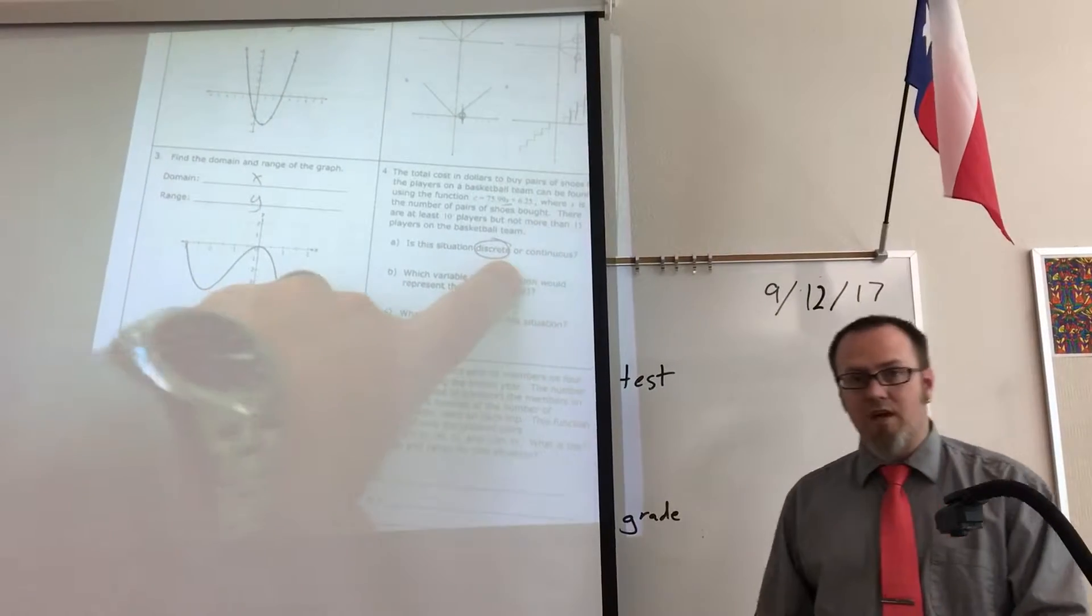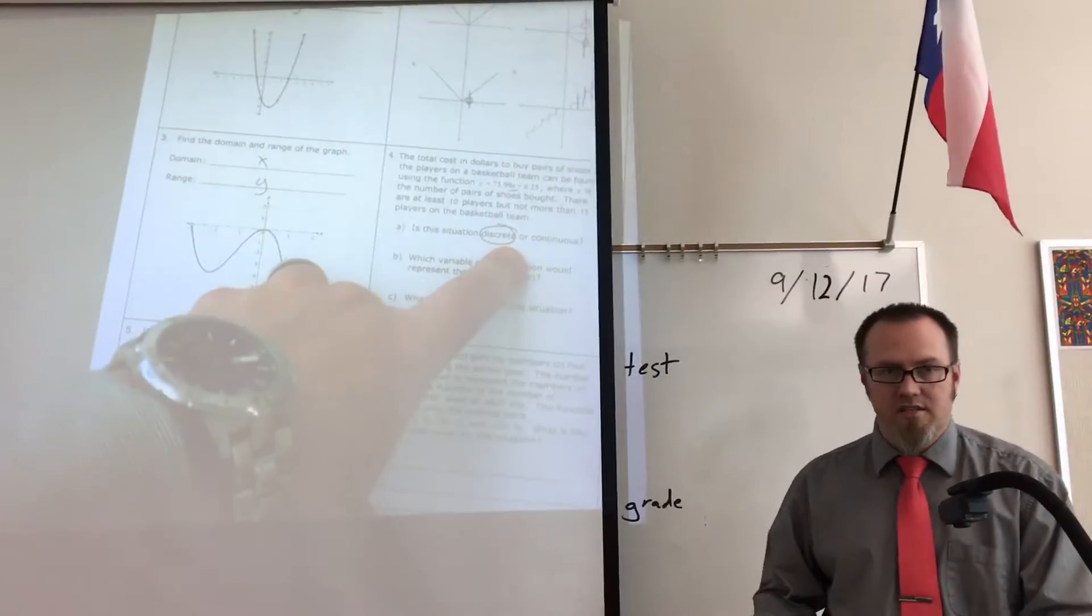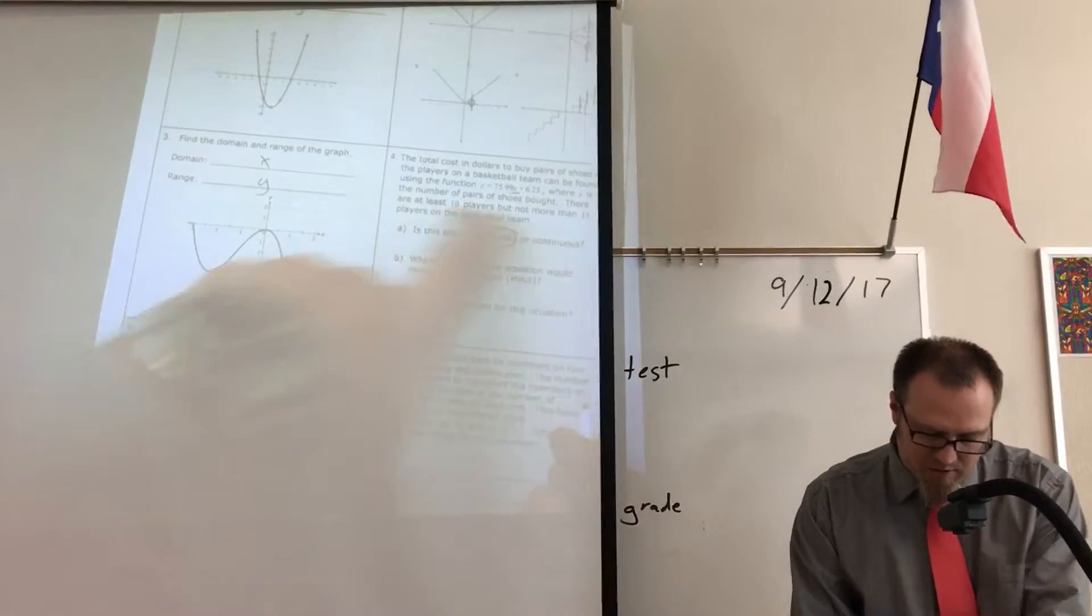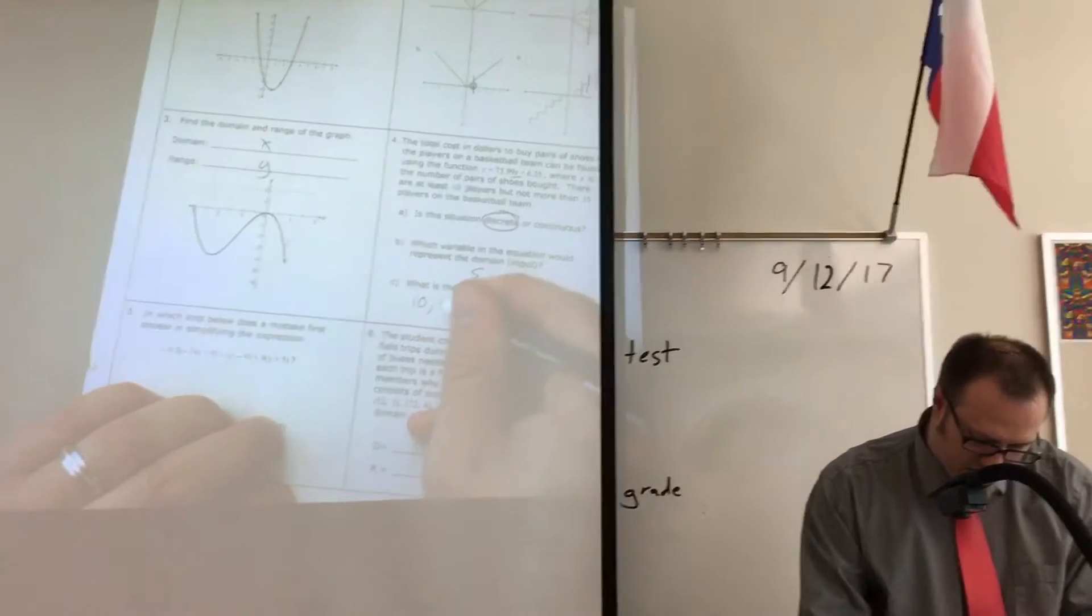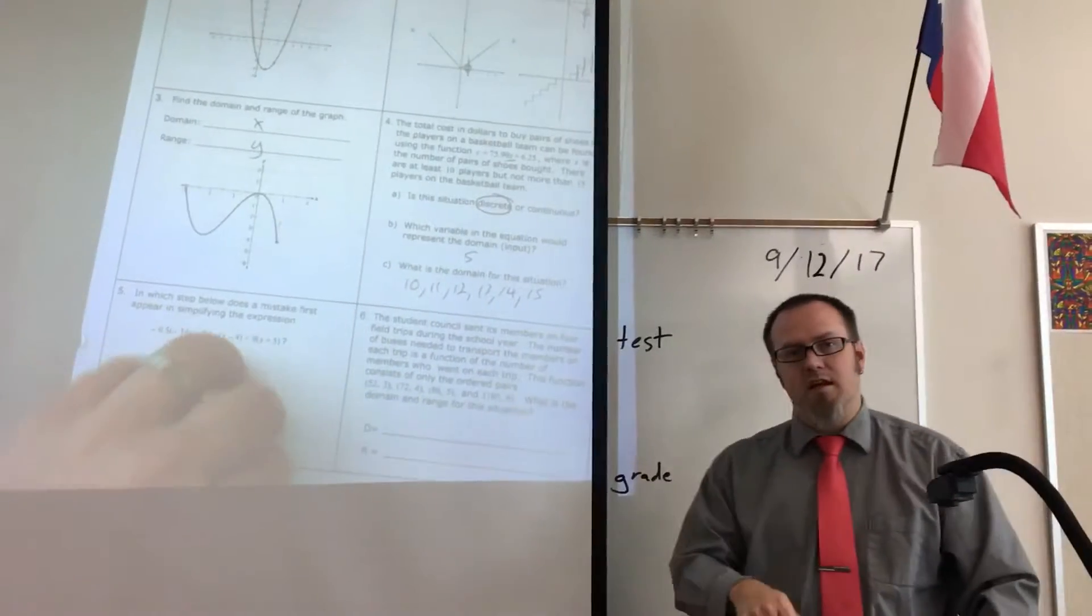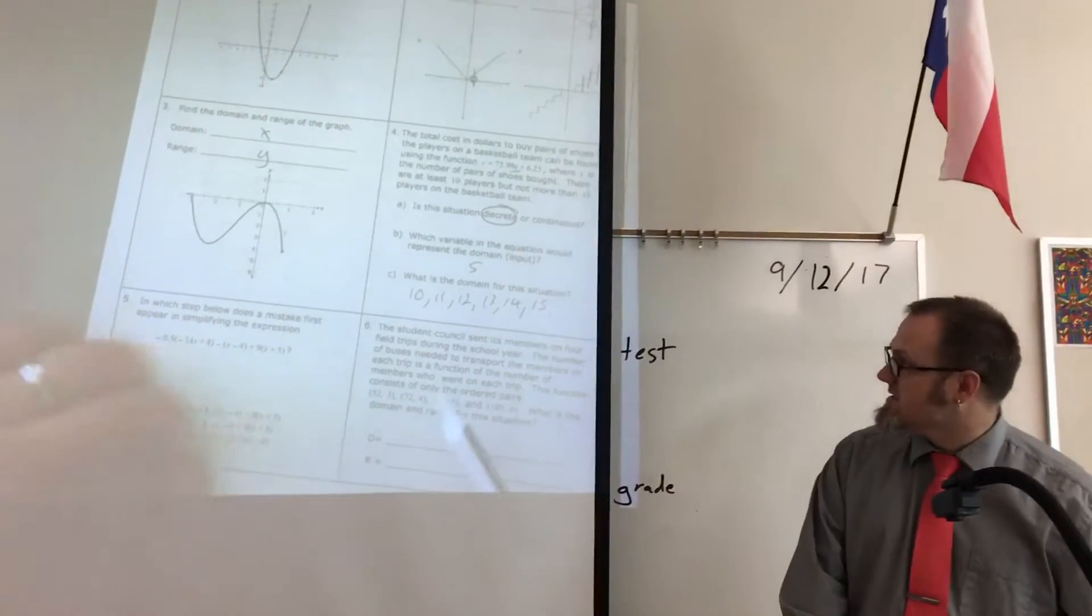The domain, because it's discrete, is a list of my possible values, the players on the team. It says we have between 10 and 15, so 10, 11, 12, 13, 14, 15. Expect a similar problem on the test.